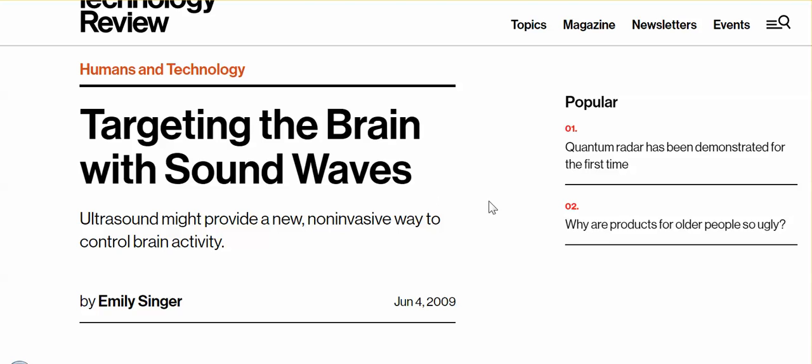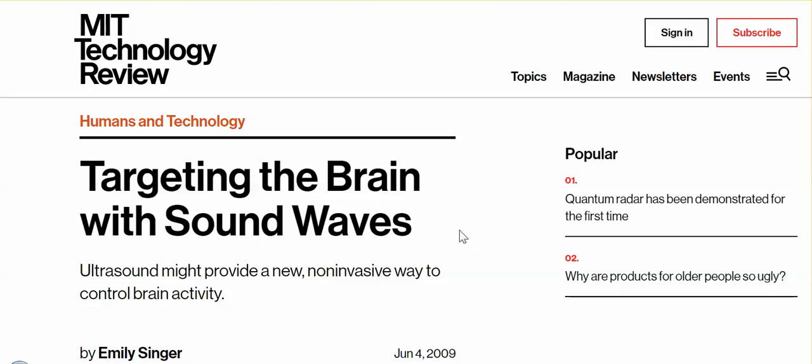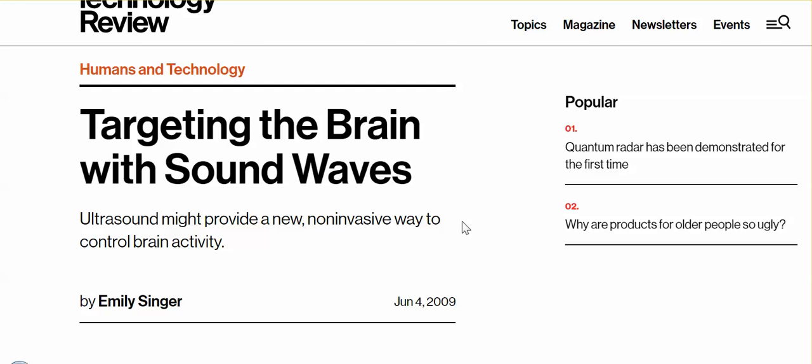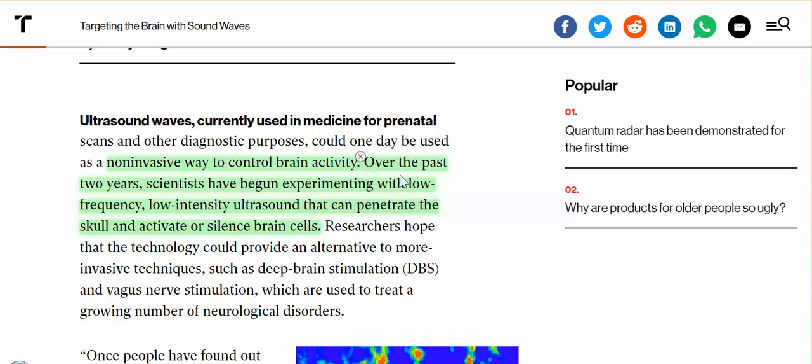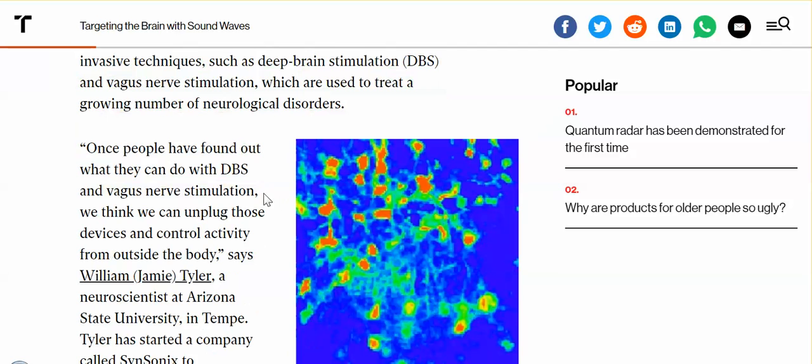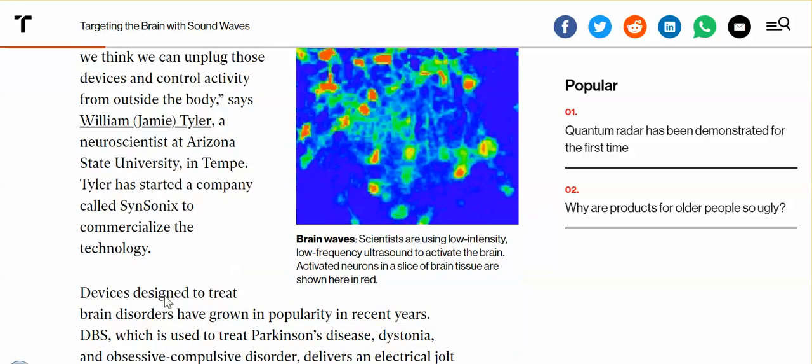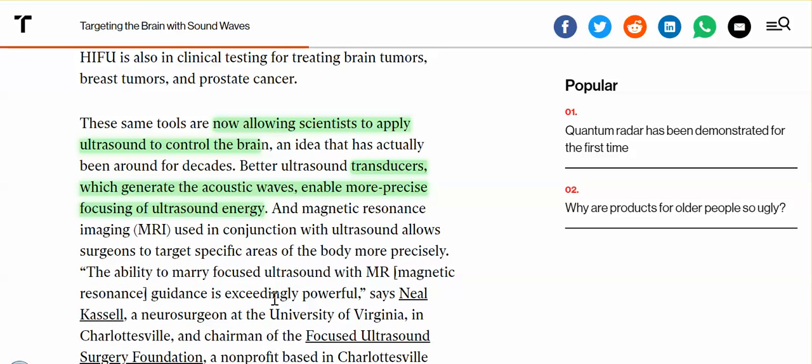Targeting the brain with sound waves. It's 2009 MIT Technology Review. Ultrasound might provide a new non-invasive way to control brain activity. Over the past two years, scientists have begun experimenting with low frequency, low intensity ultrasound that can penetrate the skull and activate or silence brain cells. Just over the past two years. Well, so 2007, 2008, into 2009. Really? If people would just do a little bit of research, they would find that all of the articles that they read, whether it is mainstream media or coming out of colleges, they would be able to pick up the lies so easily.